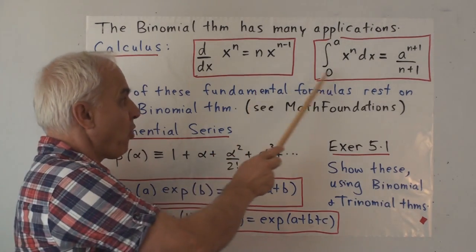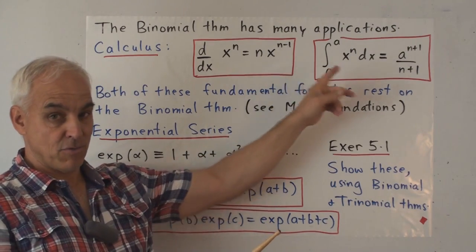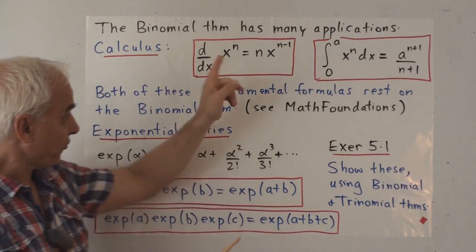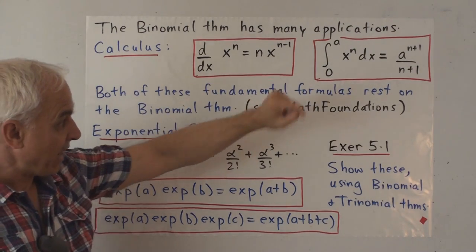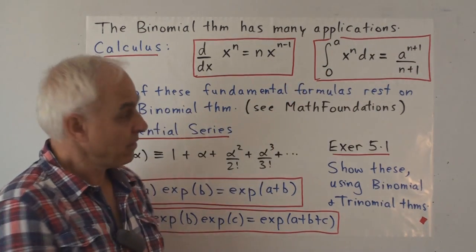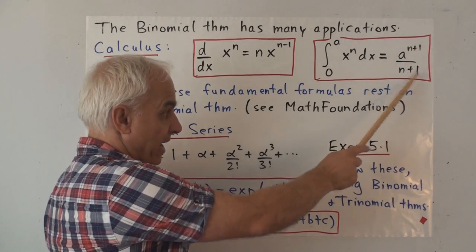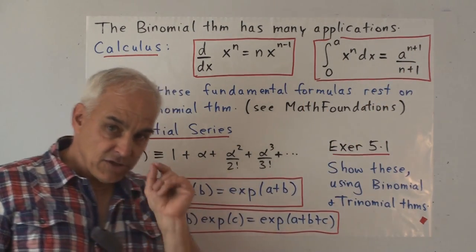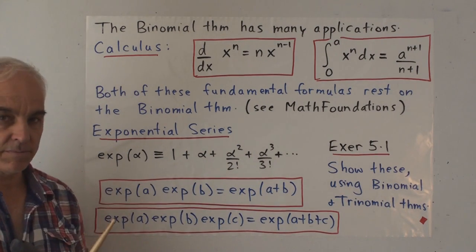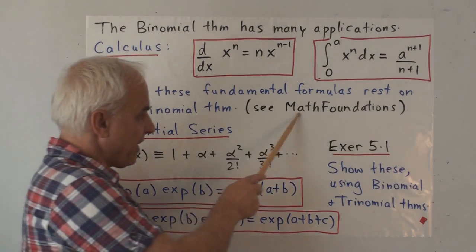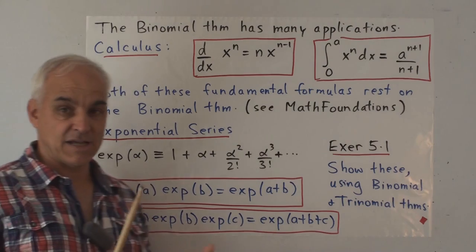This binomial theorem has many applications to calculus. In fact the two most important formulas in calculus which are these two right here, these are the two most important formulas in calculus. The derivative of x to the n is n times x to the n minus 1 and the integral of x to the n say from 0 to a is a to the n plus 1 divided by n plus 1.